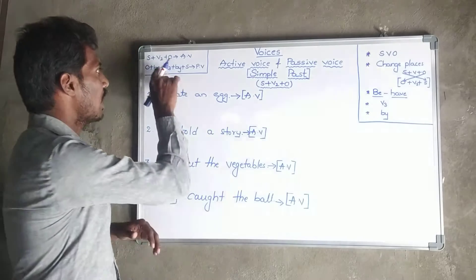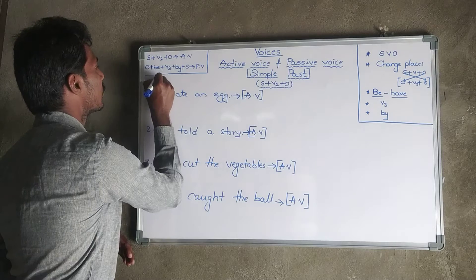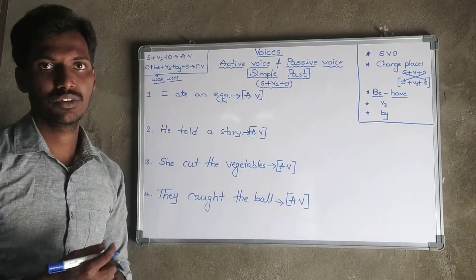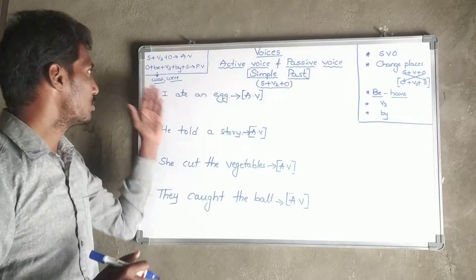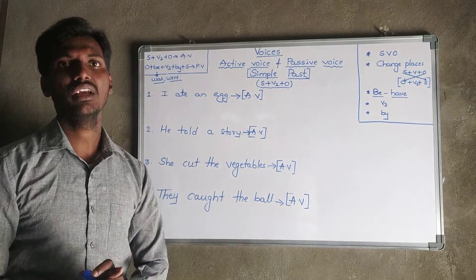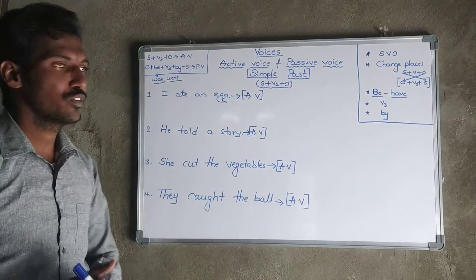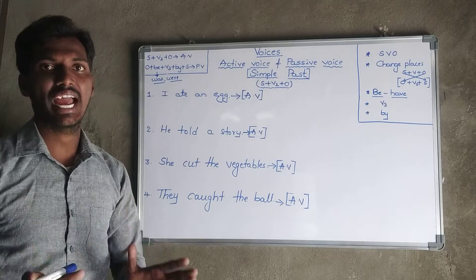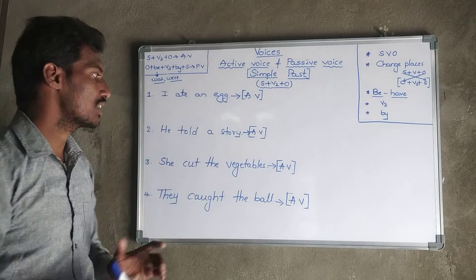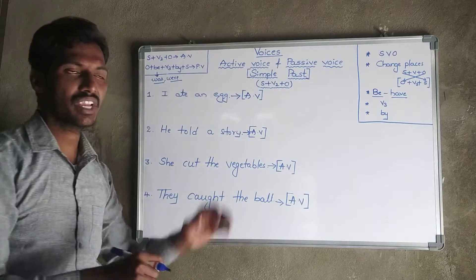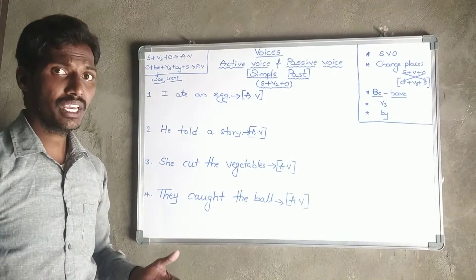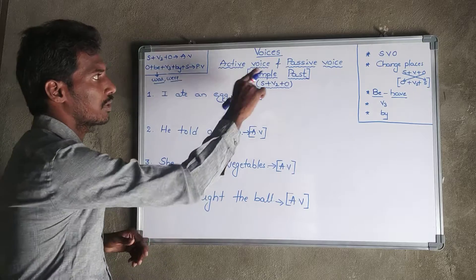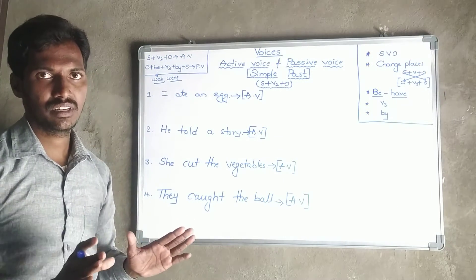Both principles of simple present and simple past look similar. The only difference is the different V-forms used in different tenses. We use 'was' for singular subjects and 'were' for plural subjects. Here I have written 4 sentences related to simple past, and these are all active voices, so you can make 4 sentences. I have to prove all the sentences are related to simple past.